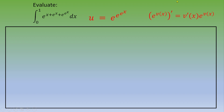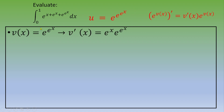Next, we calculate du. As a reminder, the derivative of e to the v of x is v prime of x times e to the v of x. Applying this formula, if v of x equals e to the e to the x, then v prime of x equals e to the x times e to the e to the x.